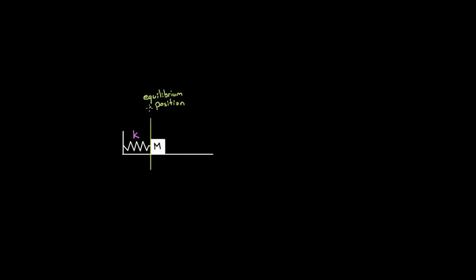We call this point where the spring neither pushes nor pulls the spring's natural length. And for a mass on a horizontal spring, this is also the equilibrium position — the point where the net force on the mass is zero. So the equilibrium position is at the point where the spring is at its natural length, and if you just put the mass there, it would stay there forever at rest.